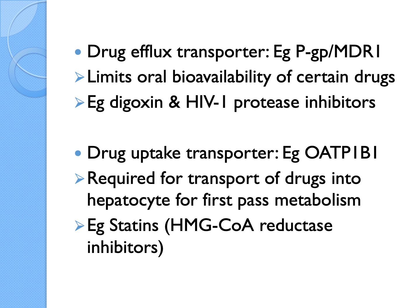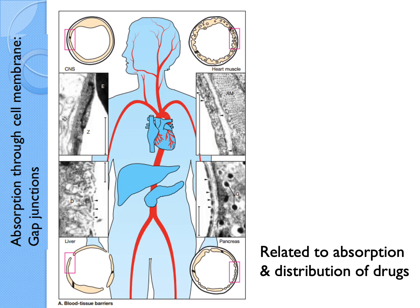Another factor influencing absorption is the size of the gap junctions — the gap between cells or endothelial cells in the blood vessels. The blood vessels are not covered by one big cell throughout; there are joints between different cells, and between them there are mini gaps. For certain locations like the liver and the pancreas, the gaps are actually bigger. This makes sense because the liver has a lot of movement of material — toxic material needs to get in to be detoxified or metabolized, then get back into the blood vessels. For the pancreas, molecules like insulin get secreted into the blood vessels.